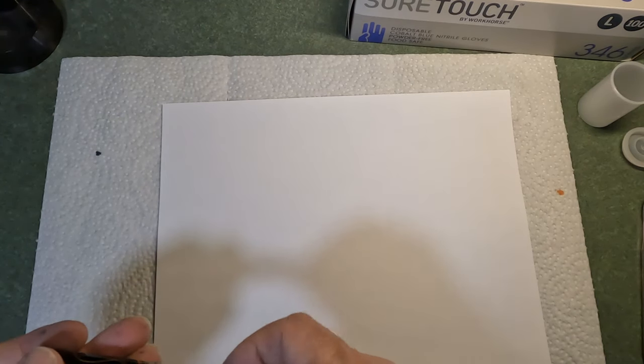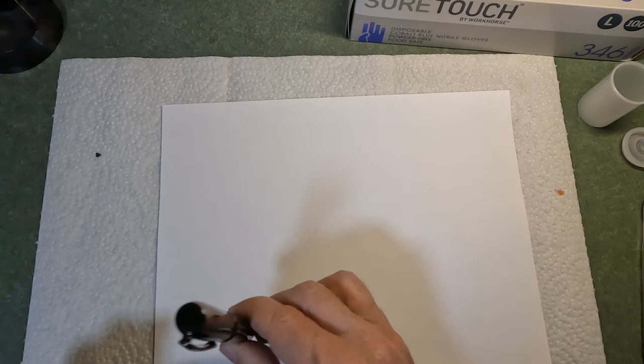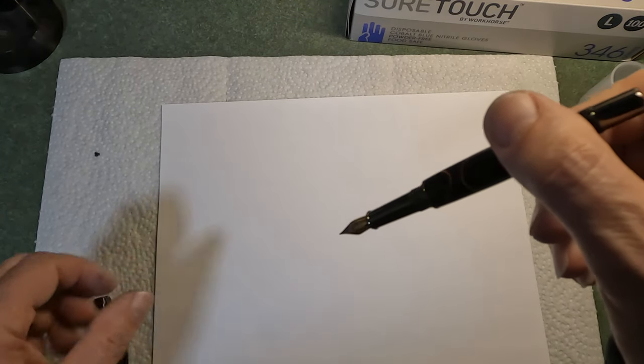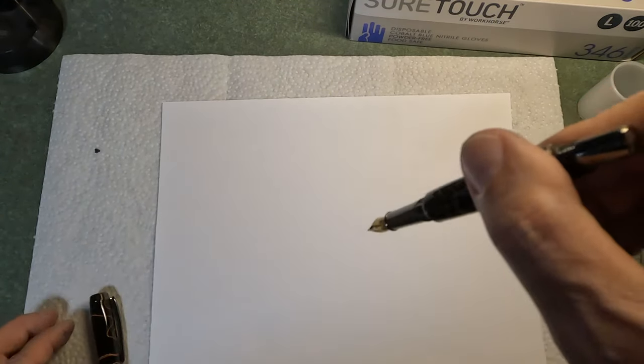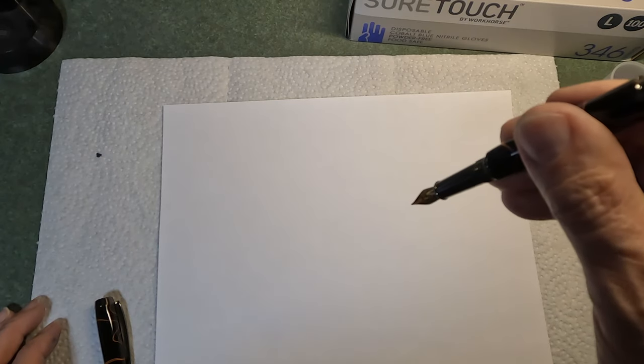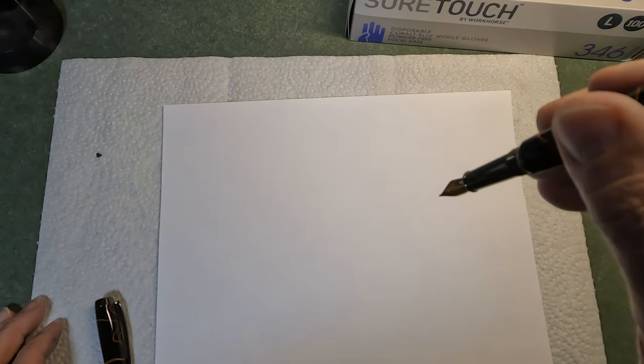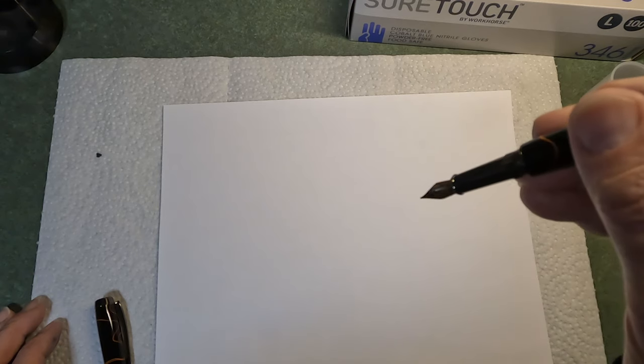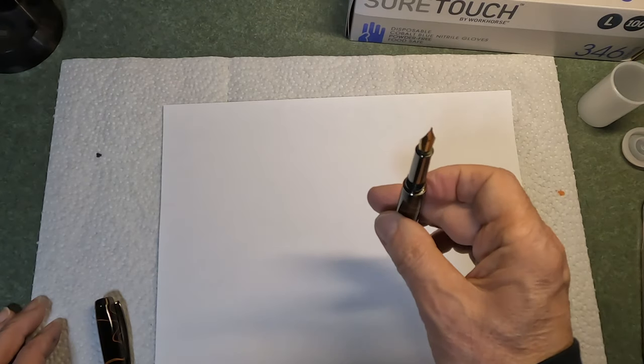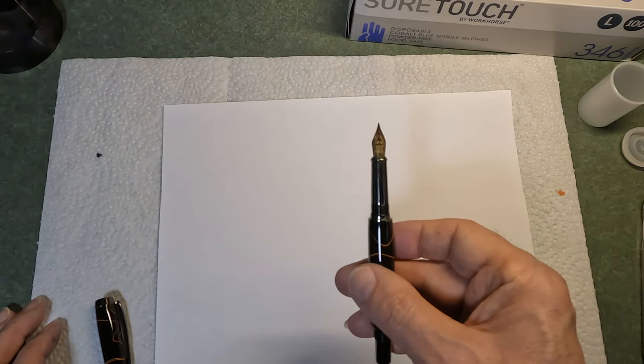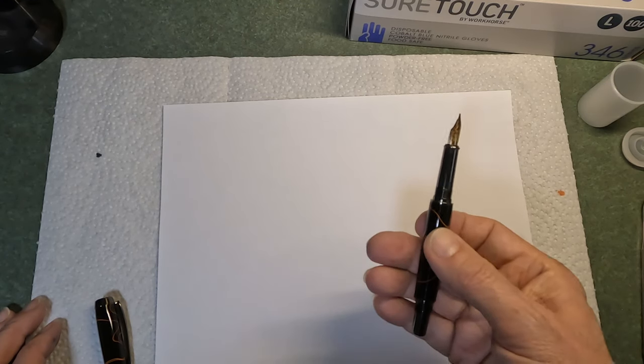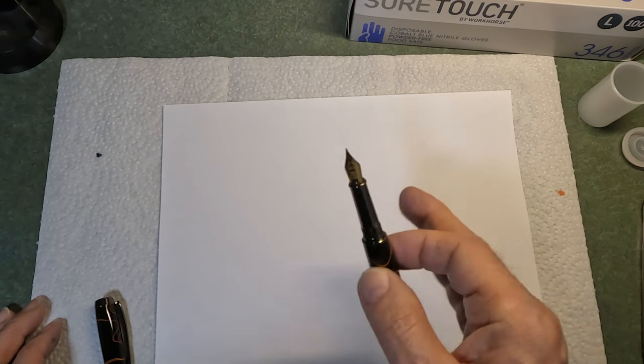You also want to store them nib side up. So you don't want to store the pen nib side down because ink can easily spill, especially if it gets jostled. Now some people do say that storing your pen nib side down keeps the pen flooded so that it will not dry out, whereas storing it nib side up can cause the pen to dry out, which is true. However, I would, it's very easy to resolve a dried out pen. We'll talk about that in a moment.